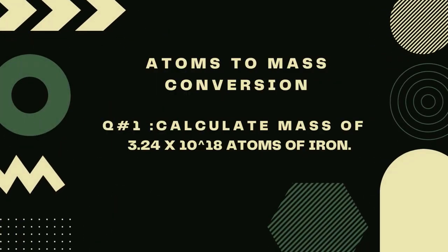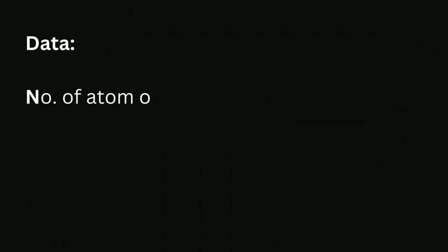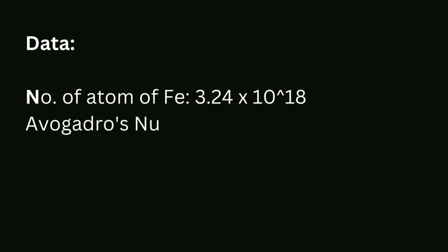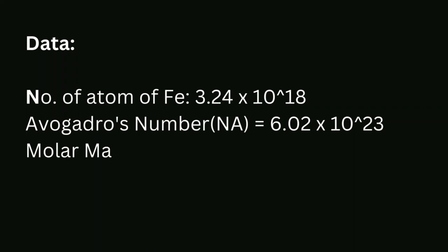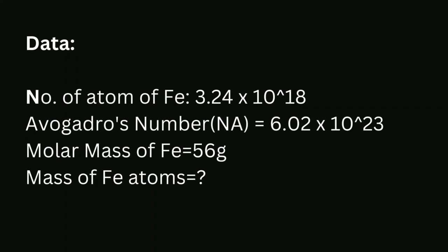Atoms to mass conversion, question number one: calculate the mass of 3.24 × 10¹⁸ atoms of iron. Arranging the data first: number of atoms of iron = 3.24 × 10¹⁸, Avogadro's number Nₐ = 6.02 × 10²³, molar mass of iron = 56 g/mol. Mass of iron atoms is to be calculated.